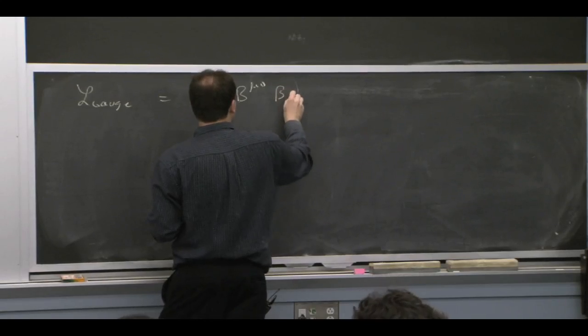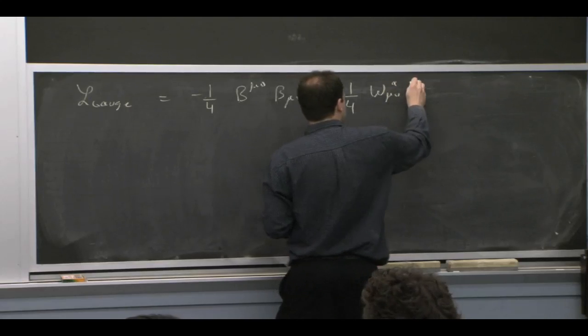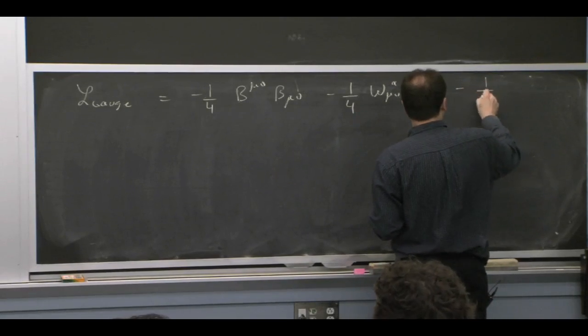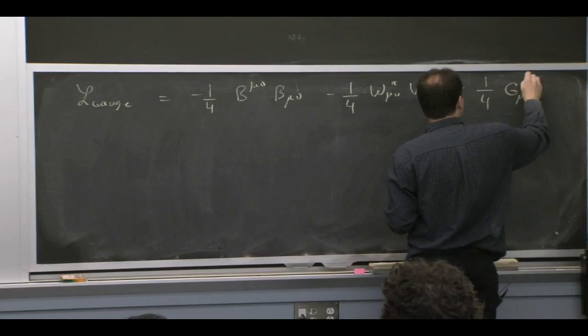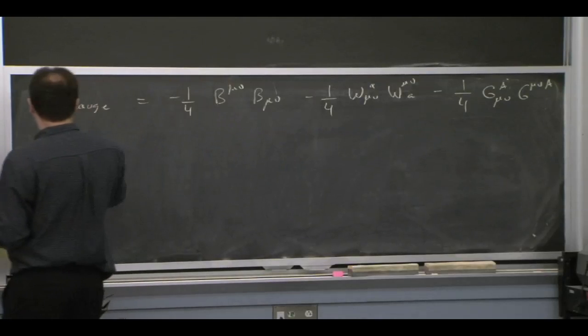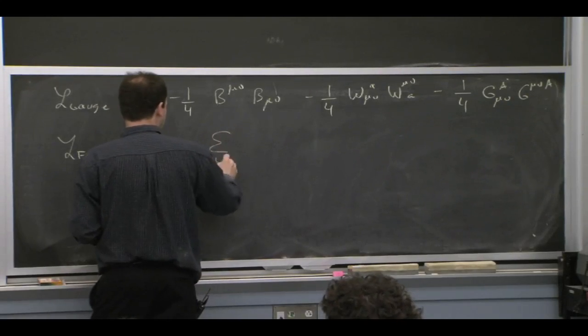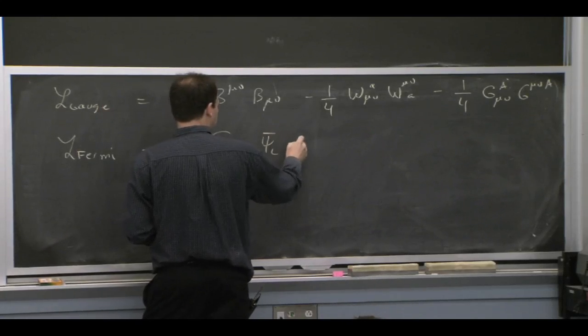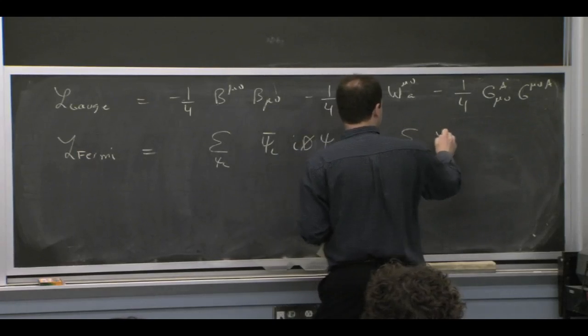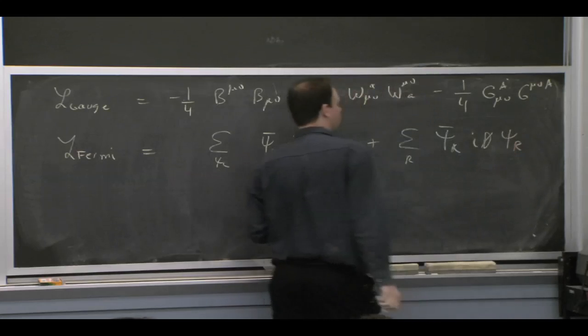So to give you a taste, I just write the other two down, which are the prettier parts anyway. So we have field strengths for the kinetic terms for our gauge bosons. And the fermionic Lagrangian, I can write it as a sum over the left-handed fields, fermion, covariant derivative, fermion, and a sum of right-handed fields, fermion, covariant derivative, fermion.